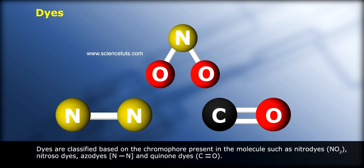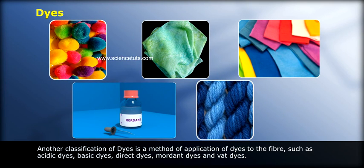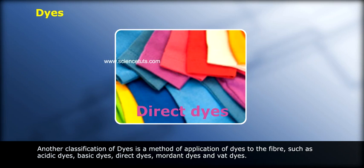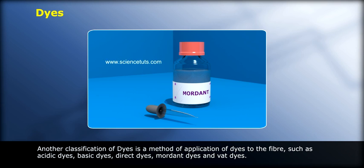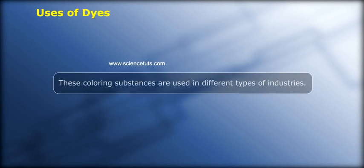Chromophore-based classifications include: nitro dyes (NO2), nitroso dyes, azo dyes (N=N), and quinone dyes (C=O). Another classification is based on the method of application to the fiber, such as acidic dyes, basic dyes, direct dyes, mordant dyes, and vat dyes.